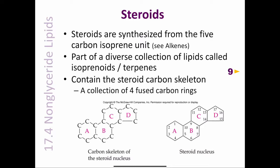All isoprenoid compounds are built from one or more 5-carbon units called isoprene. The structure of isoprene is a 5-carbon diene.